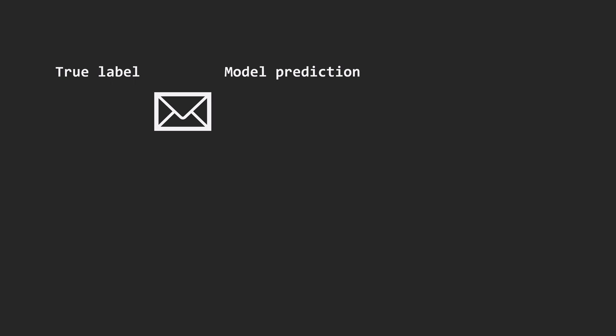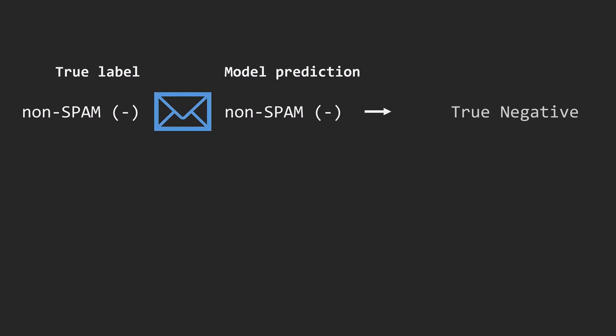Predictions can be classified into four possible outcomes. First, a regular email correctly identified as non-spam by the model. We call it true-negative, since the model correctly identifies the negative class.